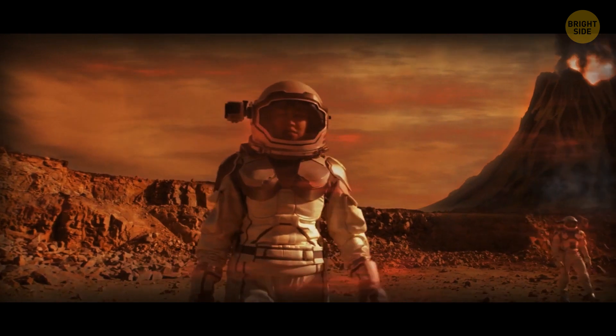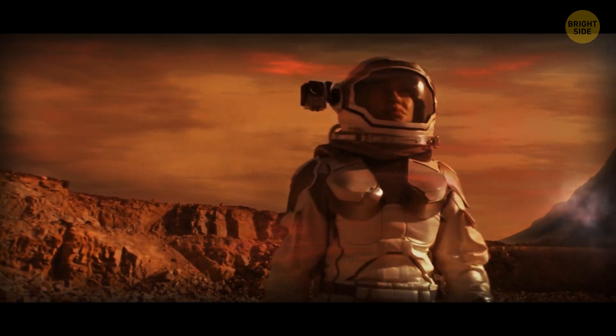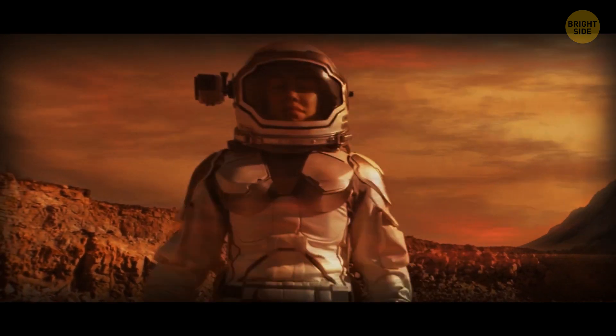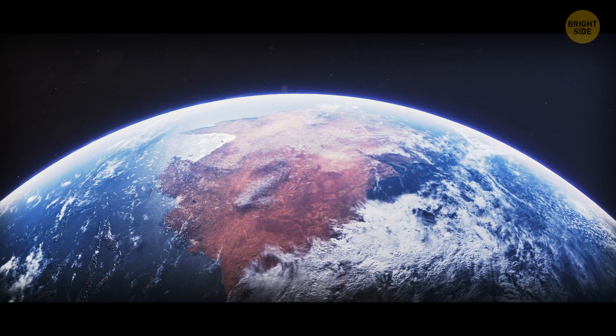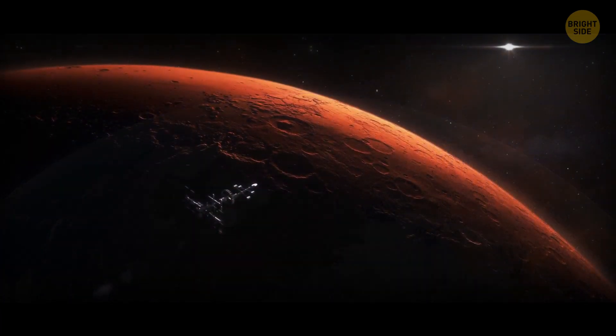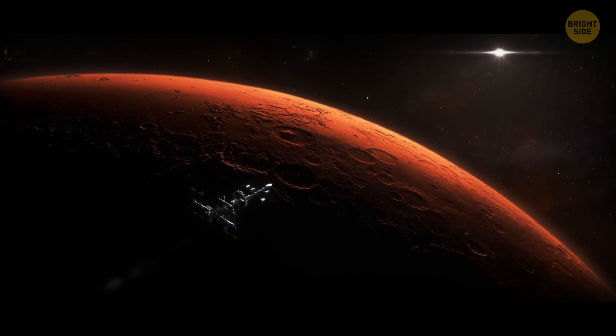Volcanoes on the red planet can probably grow so big because gravity there is a lot weaker than down on Earth. Also, the crust on our planet is moving all the time, and the Martian crust probably stays still.